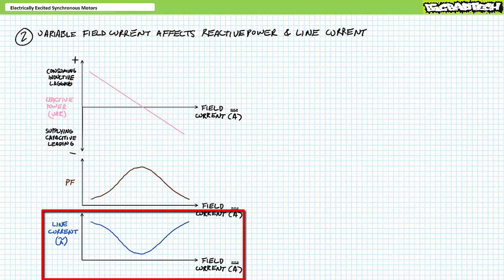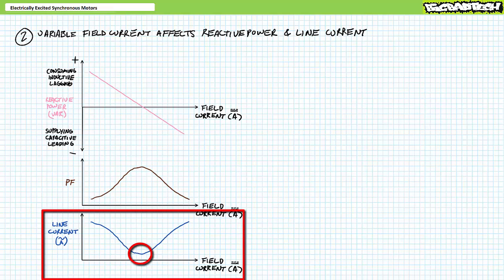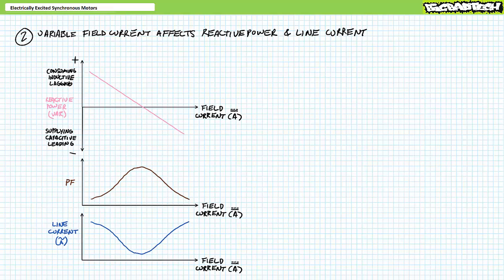A graph of line current as a function of field current for a given load condition looks something like this. At low levels of rotor excitation, the synchronous motor draws large amounts of lagging current, accounting for both the real and positive reactive power components. If field current increases, it draws less reactive power, thus current magnitude and phase shift decrease. When field current is adjusted such that the synchronous motor neither draws nor supplies reactive power, current bottoms out and is perfectly in phase with voltage. As field current is further increased, the synchronous motor starts supplying increasing amounts of negative reactive power, thus current magnitude increases and phase shift increases in a leading fashion. The graphs of power factor and line current magnitude as a function of field current are essentially inverses of one another. Note that a DC overbar is used for field current, emphasizing the rotor draws DC, while an AC overbar is used for line current, emphasizing the stator draws AC. Do not expect these helpful reminders in a field or lab environment.